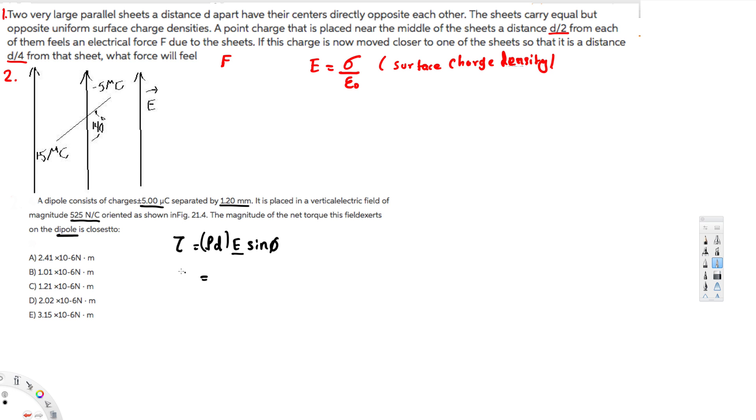Let's apply everything. q is 5 microcoulombs, so 5 times 10 to the power of minus 6 coulombs, times the distance 1.2 millimeters, so 1.2 times 10 to the power of minus 3 meters, times E, the electric field 525 newtons per coulomb.